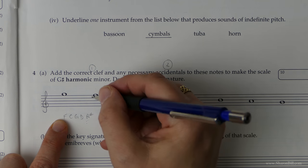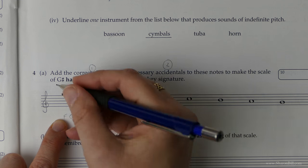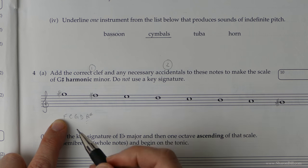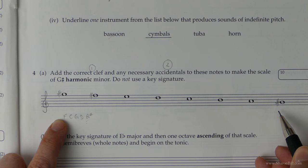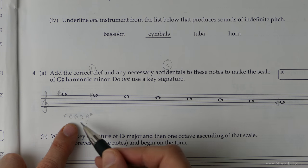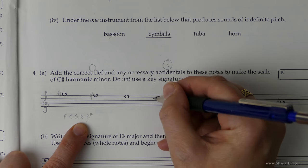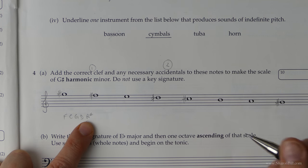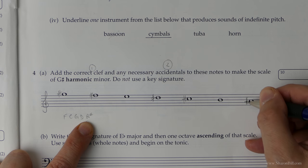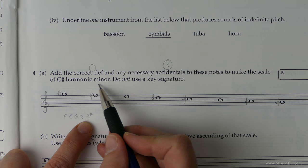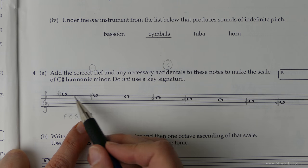So F sharps, G sharps of course occur twice because we begin and end on that. It looks like we're writing too many sharps, but we've got the key note twice. C sharps. So F, C, G, D sharps and A sharps.